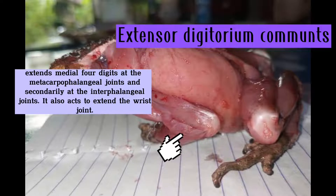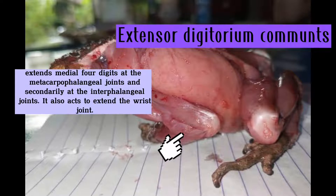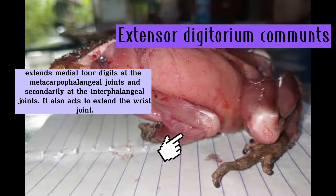The extensor digitorum communis extends the medial four digits at the metacarpophalangeal joints and secondarily at the interphalangeal joints. It also acts to extend the wrist joint.